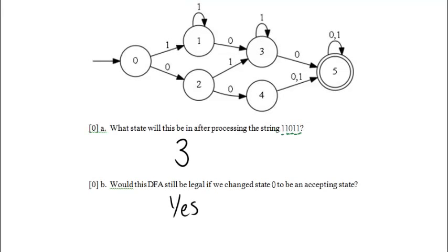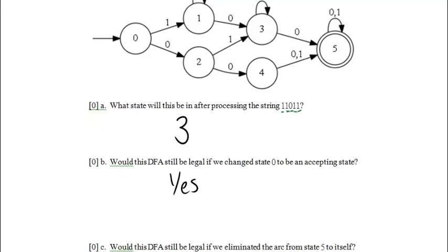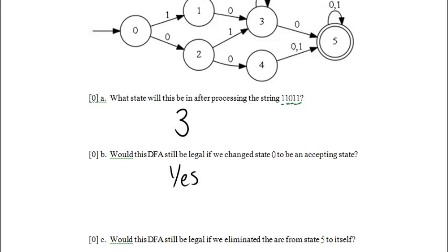Let's see if we can get the next question on screen without losing the whole DFA. Would this DFA still be legal if we eliminated the arc from state 5 to itself? So that's this arc up here from state 5 to itself. So we'd erase that. It would be a little hard for me to erase that, but I can certainly scribble over it here.